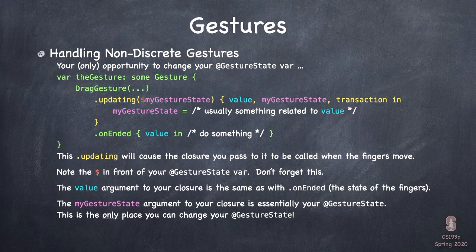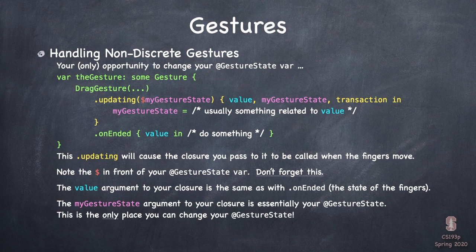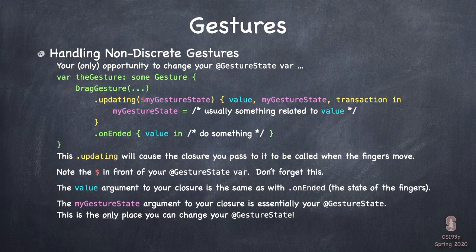If you want to simplify your mental model: inside the closure, you can change your gestureState var. The conceptual semantic thing going on is that this is the only way you're supposed to change your gestureState — you cannot change it anywhere else except inside this closure. That makes sense because gestureState is only supposed to be active when the gesture is going on. You'd never want to set it at any other time. You're almost always going to change it to something based on what that `value` is — depending on how close the fingers are together or how much they've moved.